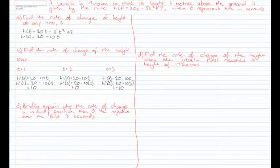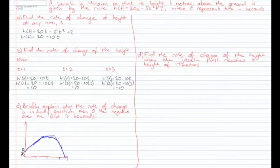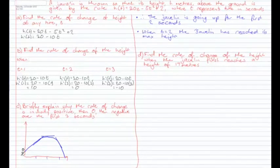Part C: briefly explain why the rate of change is initially positive, then 0, then negative over the first three seconds. Let's draw a graph to help. It's a javelin, so the guy throws it and it goes up, then comes back down and hits the ground. At t = 1 second the javelin is going up, at t = 2 seconds it's flat at maximum height, and at t = 3 seconds it's coming back down. So after 1 second the rate of change is positive, after 2 seconds it's 0 because the javelin has reached its maximum height, and after 3 seconds it's negative because the javelin is going back down towards the ground.